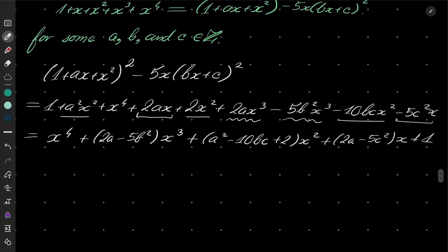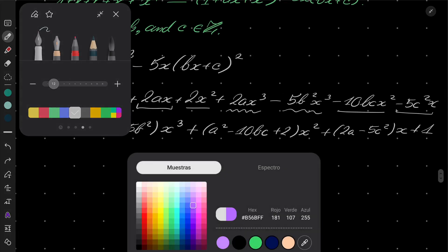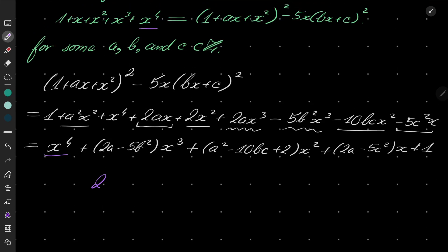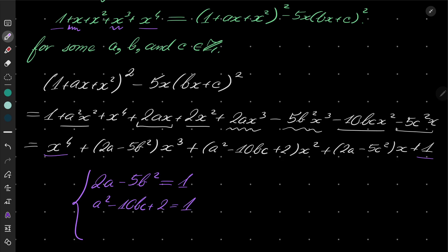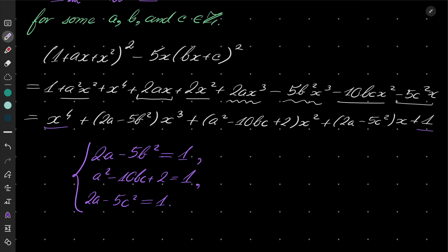That should be identically equal to 1 plus x plus x squared plus x cubed plus x to the fourth power. The x to the fourth and the constant 1 match on both sides. Then 2a minus 5b squared should equal 1 for the x cubed coefficient. Also, a squared minus 10bc plus 2 should equal 1 for the x squared coefficient. And finally, 2a minus 5c squared should equal 1. We need to find just one triple of solutions.